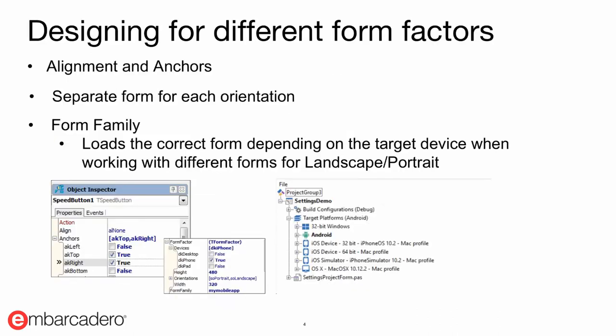When designing for different form factors, it's important to keep in mind that we have many different properties to ensure your application looks nice across different form factors and orientations. You can use alignment and anchors to align your controls. For example, if you have a toolbar button you could use align left to anchor that control left on the toolbar. We also have anchors for controlling the position of controls on the form itself. If you want a UI that looks different in portrait versus landscape mode, it's recommended to use a separate form for each orientation. We also have something called form family, which loads the correct form depending on the target device.